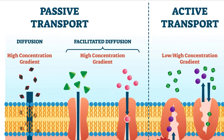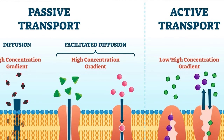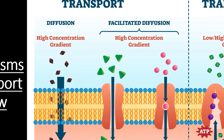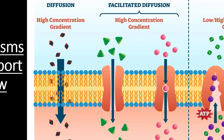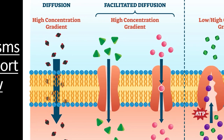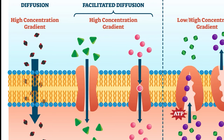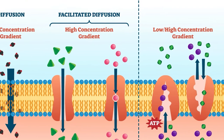There are two basic types of transport that happen across the cell membrane. Passive transport includes simple diffusion and facilitated diffusion, neither of which requires an input of energy. Small, uncharged molecules can move through the membrane easily via diffusion. The carrier proteins and protein channels of facilitated diffusion are needed for ions and larger molecules. Remember that passive transport always moves substances down their concentration gradient, from high to low.